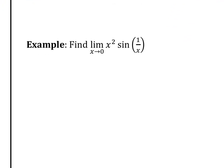Let's look at this example: the limit as x goes to 0 of x squared times sine of 1 over x. The first thing I said about finding limits is you plug it in. If you plug this in, you get 0 times sine of 1 over 0. We know that 1 over 0 is undefined, so technically we cannot figure out the limit this way.